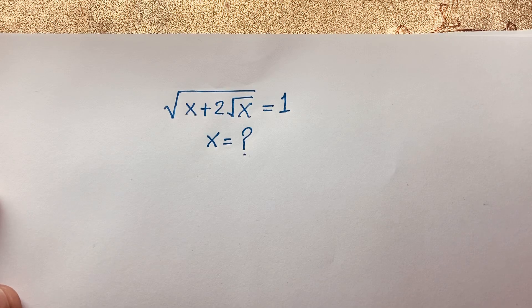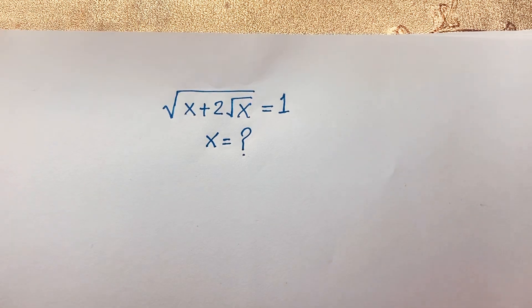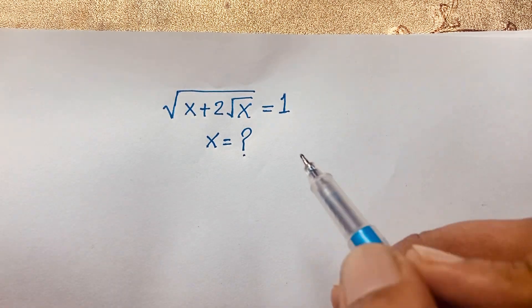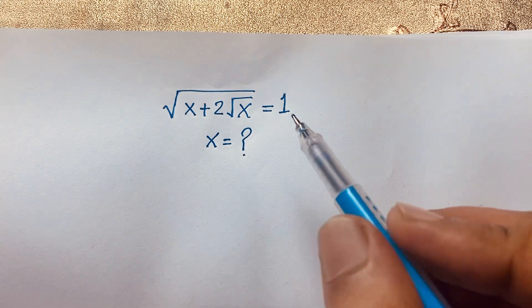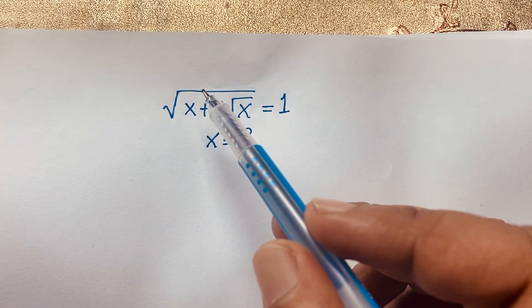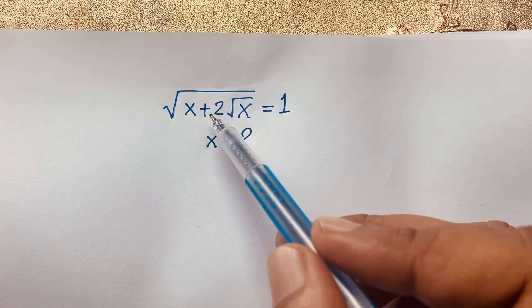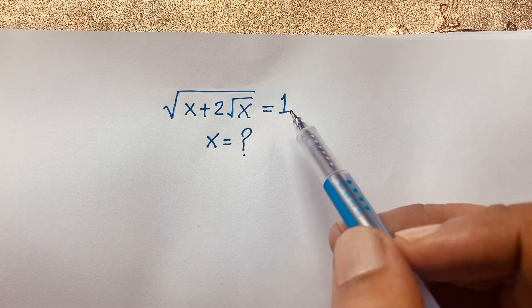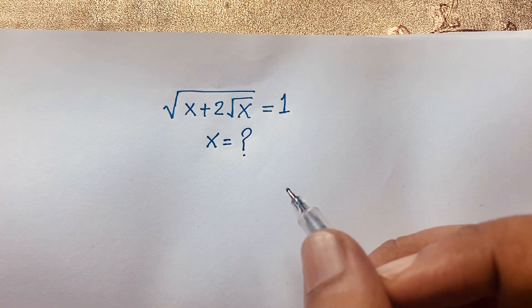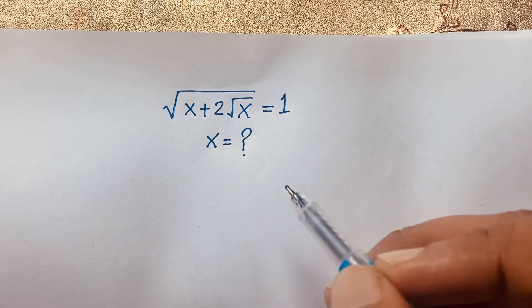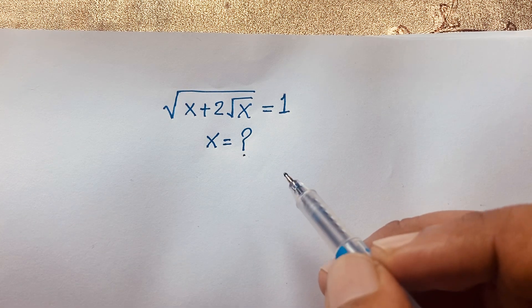Hello everyone, welcome to Rasta's Classroom. In this video, we have solved a nice square root math problem: square root of (x plus 2 square root x) is equal to 1. We will find out the value of x in this square root math problem.